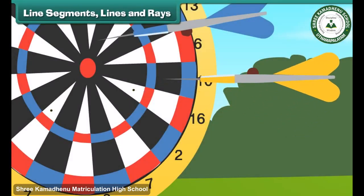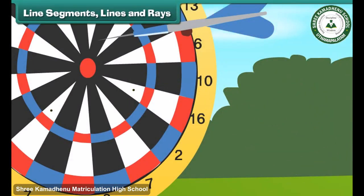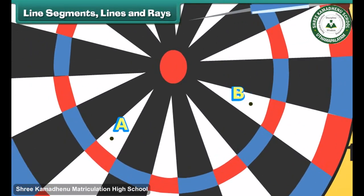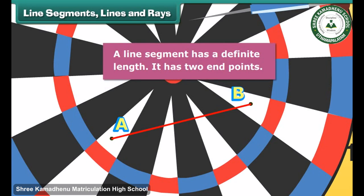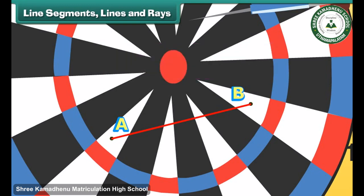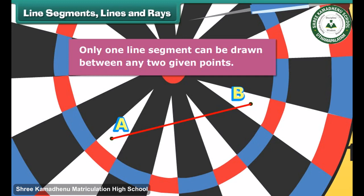Let us remove another dart to reveal another point. We name the two points A and B. We now join the two points and get the line segment AB. A line segment has a definite length and two end points. Only one line segment can be drawn between any two given points.